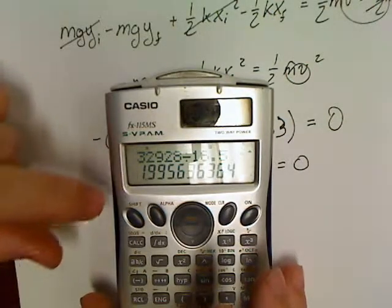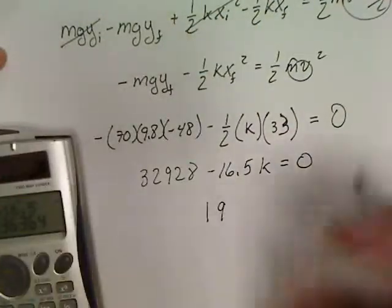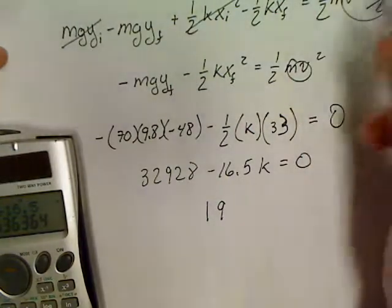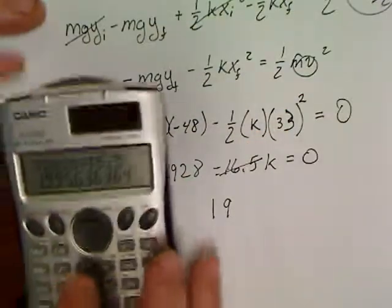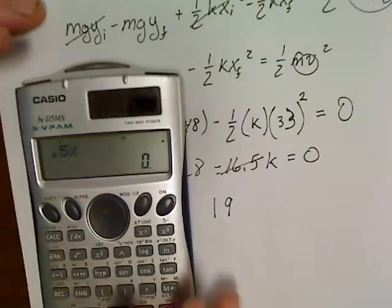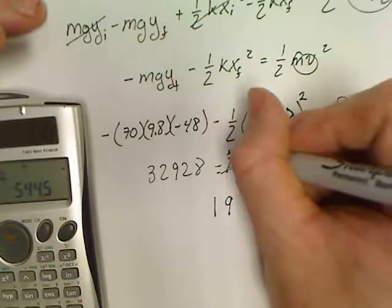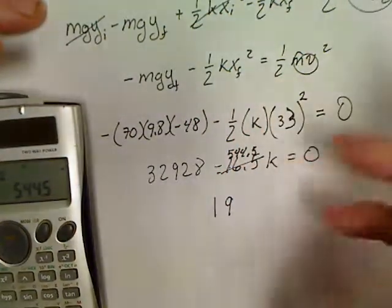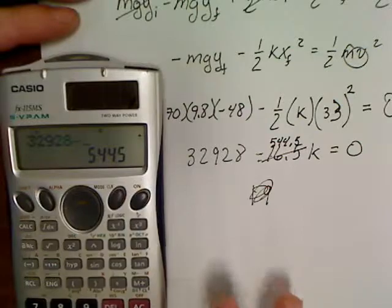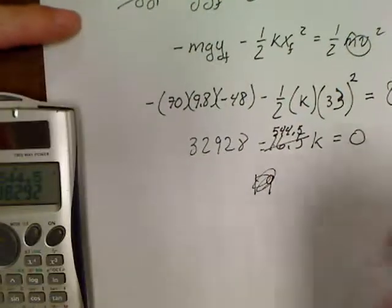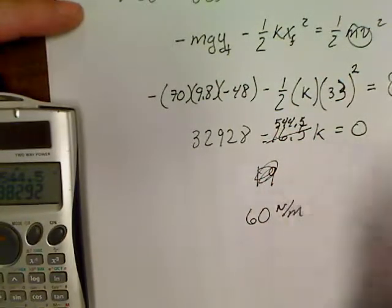I forgot that square! That's not 16.5, that is half of 33², that's 544.5. So let's try this again: 32,928 divided by 544.5 equals a spring constant of 60 newton-meters. I would say that is a big difference from our earlier answer. I almost screwed this problem up completely at this point.